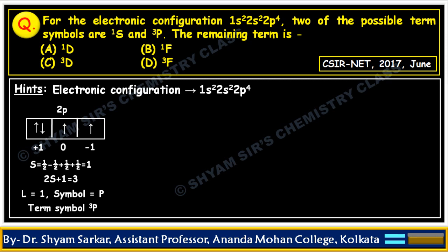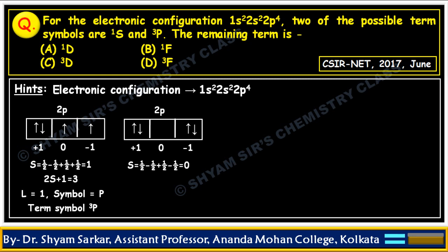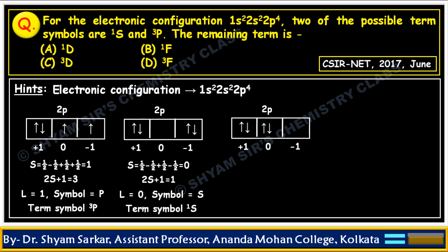In the excited state, one electron goes to another orbital and gets paired up. In this orientation, S = +½ − ½ + ½ − ½, so S = 0, and 2S+1 = 1. Then L equals the summation of ml, which equals 0. L = 0 indicates the symbol S. So the term symbol becomes 1S — which is also already given.